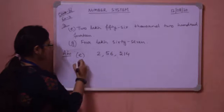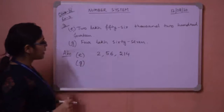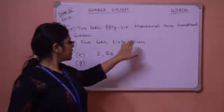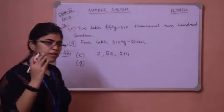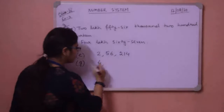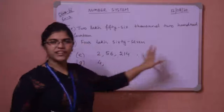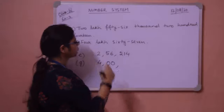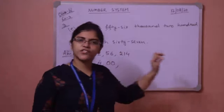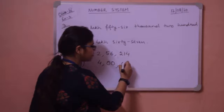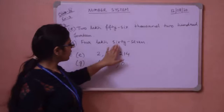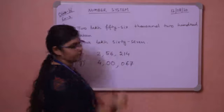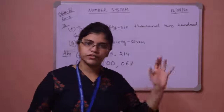Now we move on to number G. Number G, the question says 4 lakh, 67. So after 4 lakh there is a comma. There is nothing in thousands, so we put 00. There is nothing in hundreds either, so we put 0. After that we have 67. So the number is 4,00,067.